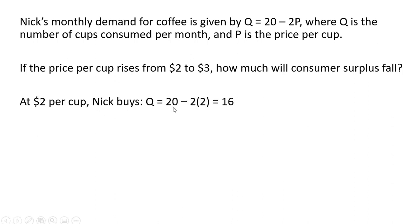At $2 per cup, Nick buys Q = 20 - 2(2) = 16 cups, just plugging $2 into the demand equation. From the price increase to $3, Nick will now buy 14 cups. Plugging $3 into the demand equation: 20 - 6 = 14 cups.